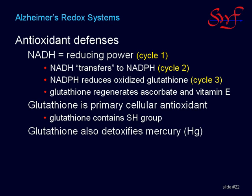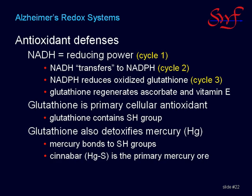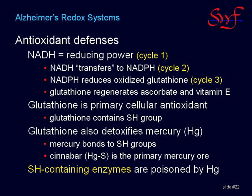Mercury has an extreme preference for binding to sulfur, as evidenced by the primary mercury ore in the Earth's crust, cinnabar, being mercury sulfide. Because of the special affinity of mercury and sulfur, all sulfhydryl-containing enzymes are at risk for mercury poisoning.